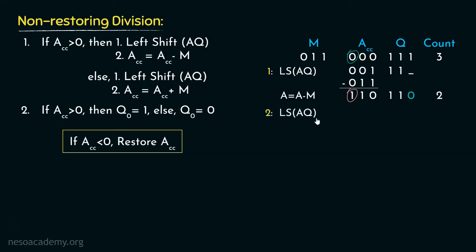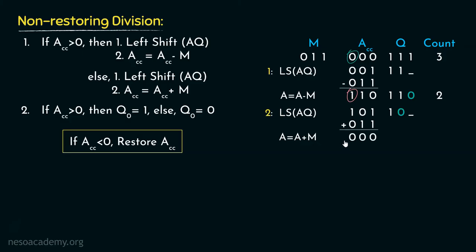Let's perform the left shift first. Once we perform the left shift, the result looks accordingly. Thereafter we perform the addition. Now 101 is 5 and 011 is 3. 5 plus 3 is 8. However, since we are using 3 bits only, 8 cannot be represented, and since we are using 2's complement, we discard the carry. The content of the accumulator is now positive, so we set Q0 to 1. With this, the count becomes 1.